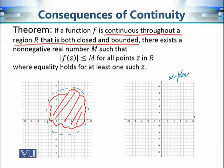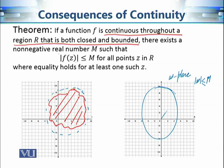For example, in the w-plane where we sketch functional values, if w denotes the variable, then |w| ≤ M describes a closed disk of radius M with boundary points included. The statement says that if region R is closed and bounded, then all of the functional values will lie inside some closed disk. All functional values will be inside this disk of radius M.